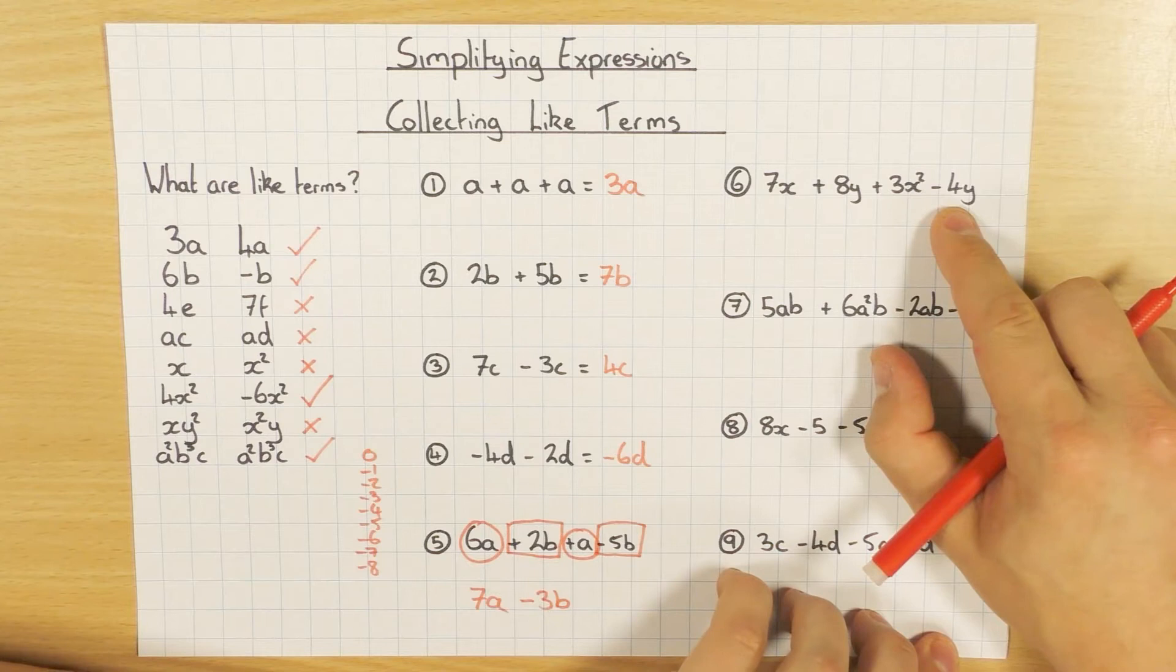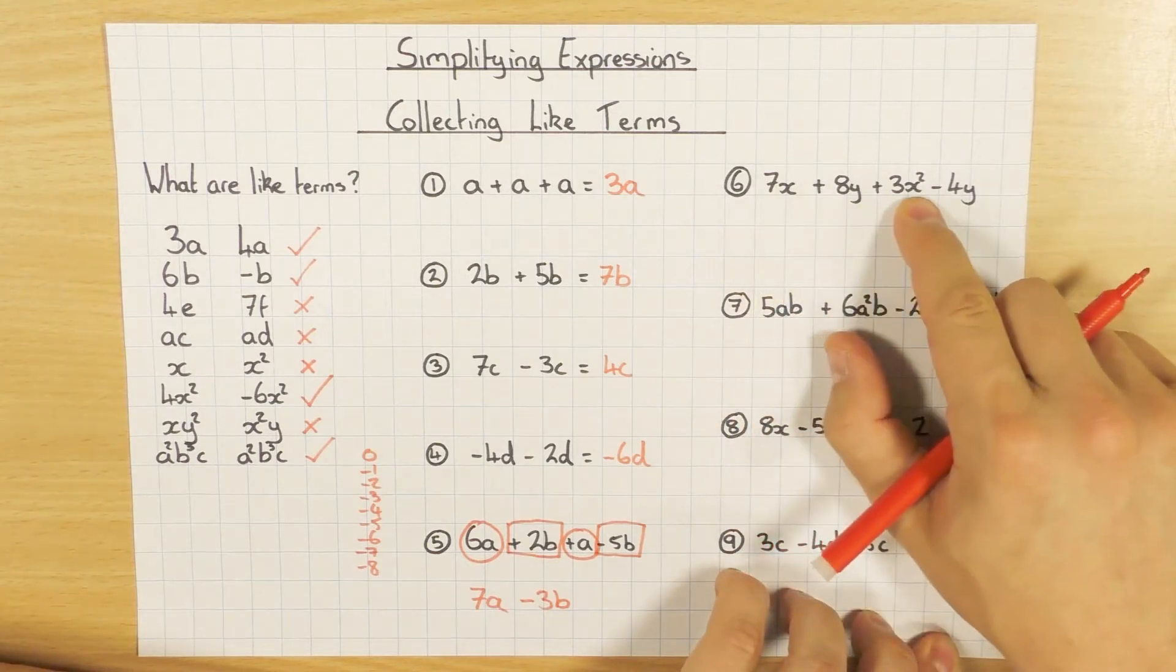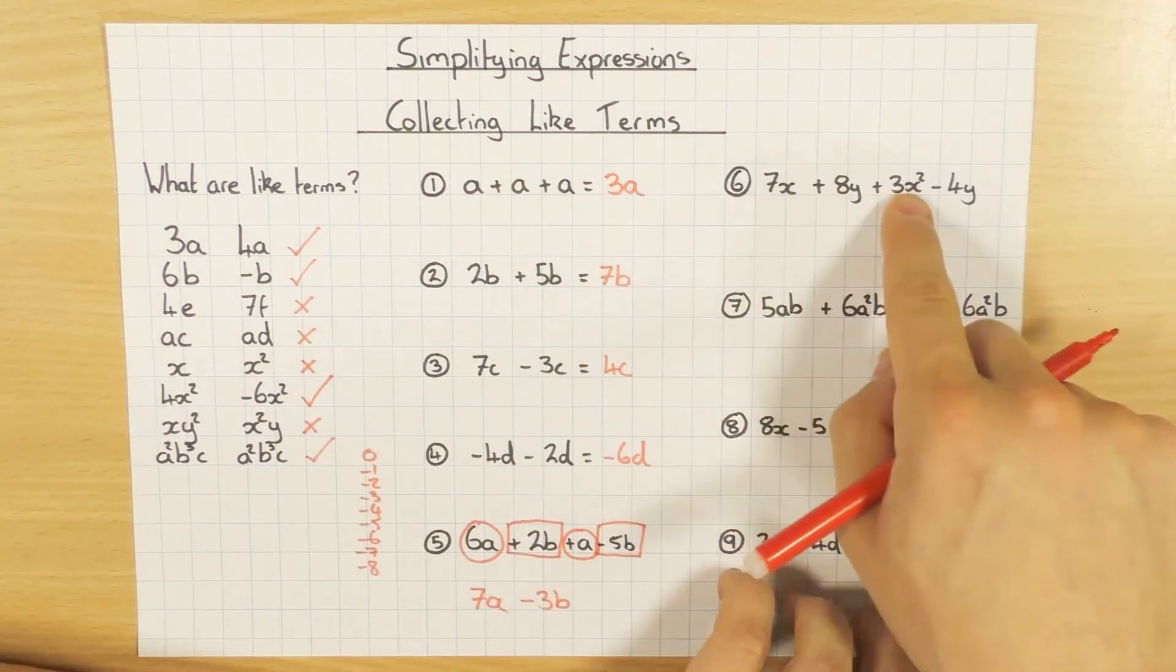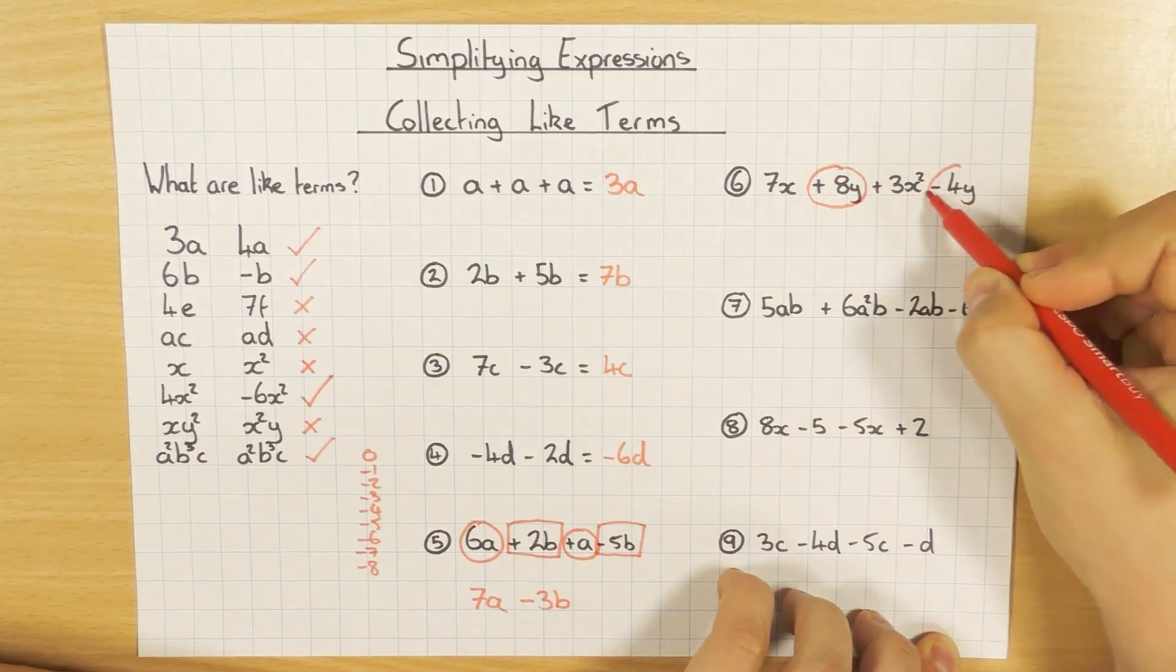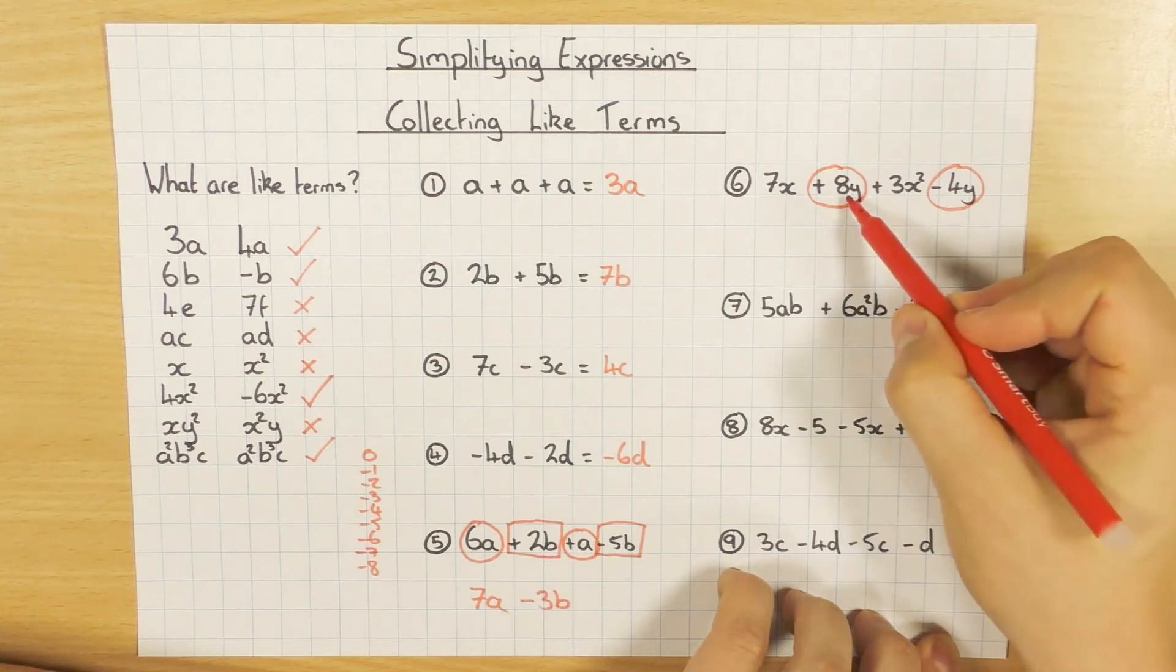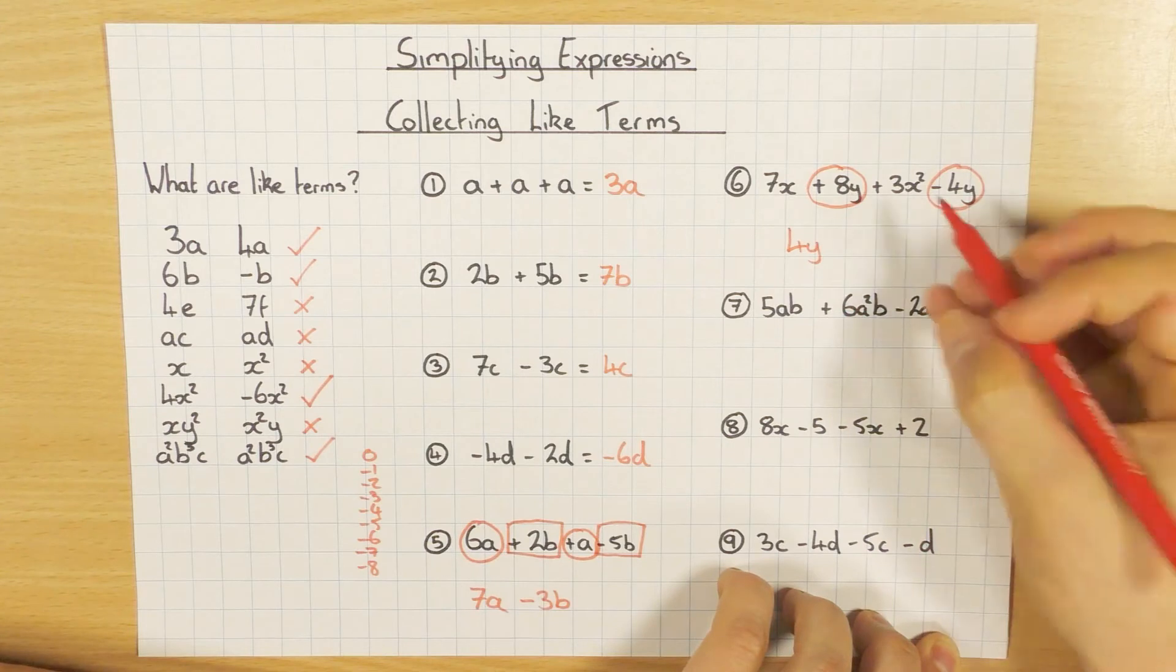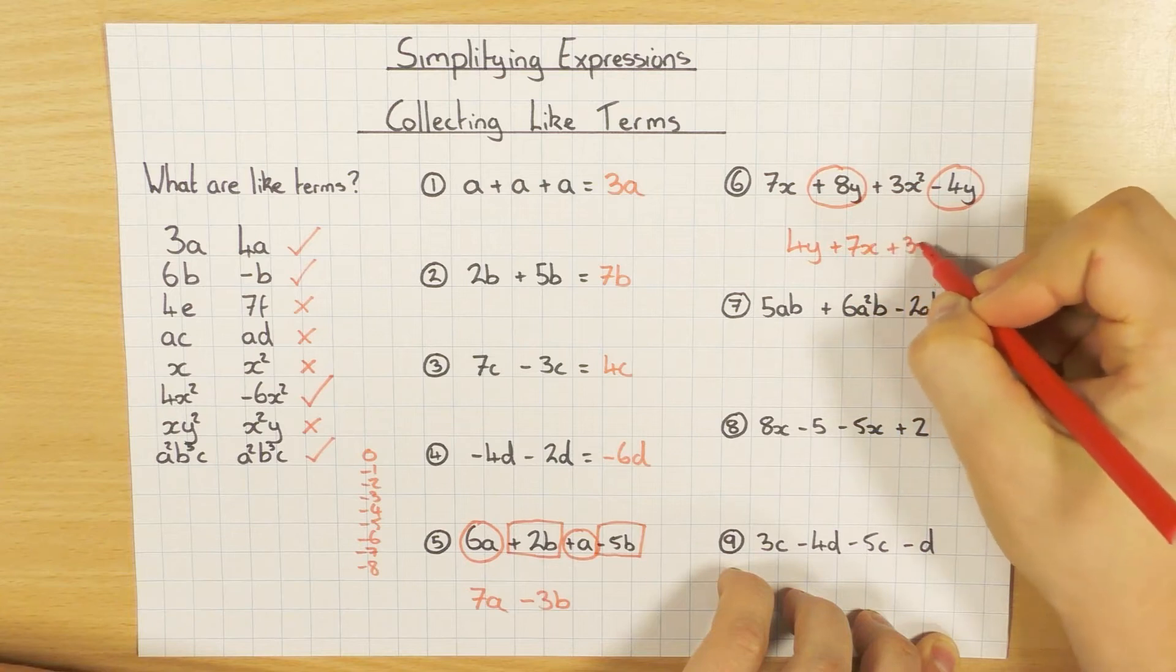This example here, again, I'm going to have a look. What's the same? I've got an X here. I've got an X squared. But remember, they need to be exactly the same. So they are not like terms. So I can't do anything with them. However, I have an 8Y and a minus 4Y. So the Y is the same. So I can simplify them. So 8Y minus 4Y is 4Y. And then because I can't do nothing with these, it's not a problem. I just leave them alone and they stay the same. So I just write them out.